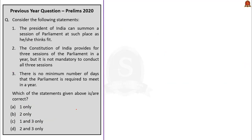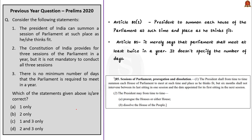The next question is a policy question based on the Parliament chapter. The constitution under Article 85(1) vests power on the President to summon each house of Parliament at such time and place as he thinks fit — statement 1 is correct, eliminating options B and D. Everything then boils down to statement 3. Article 85 merely says Parliament shall meet at least twice in a year and does not specify the number of days — so statement 3 is right. The correct answer is option C, statements 1 and 3 only.